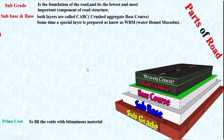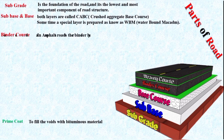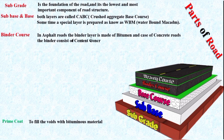Then we provide a binder course. In an asphalt road, the binder layer is made of bitumen. In the case of a concrete road, the binder consists of cement concrete.